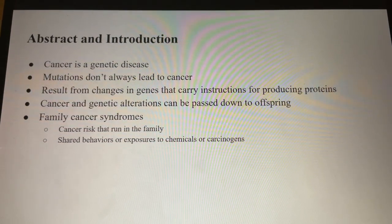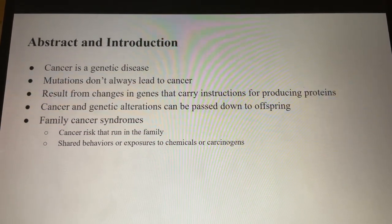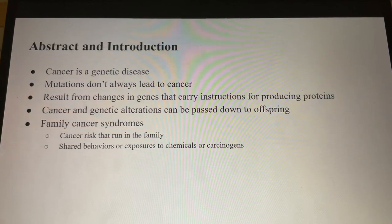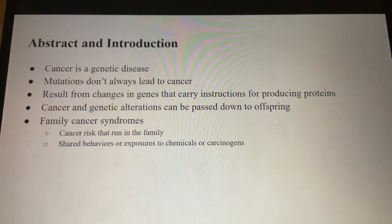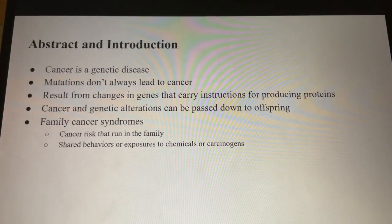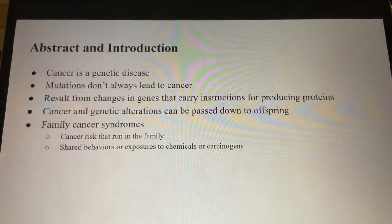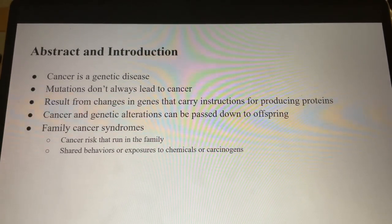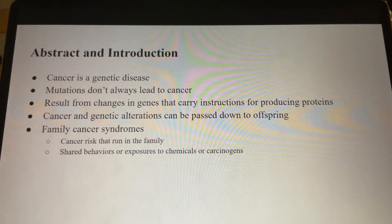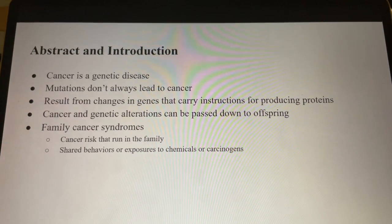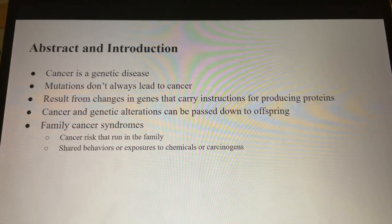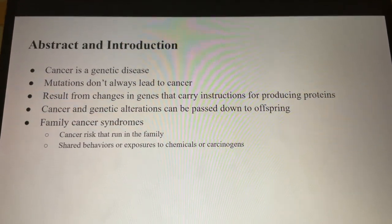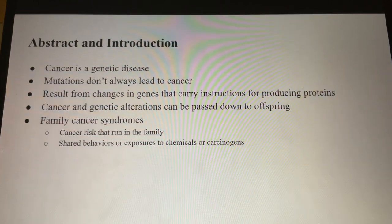As mentioned in the abstract section, even though a single mutation in the gene might not significantly impact the appearance of cancer, the accumulation of genetic changes over the years can transform normal cells into cancerous cells. Most cancerous cases are believed to occur spontaneously over time due to this cumulative process.